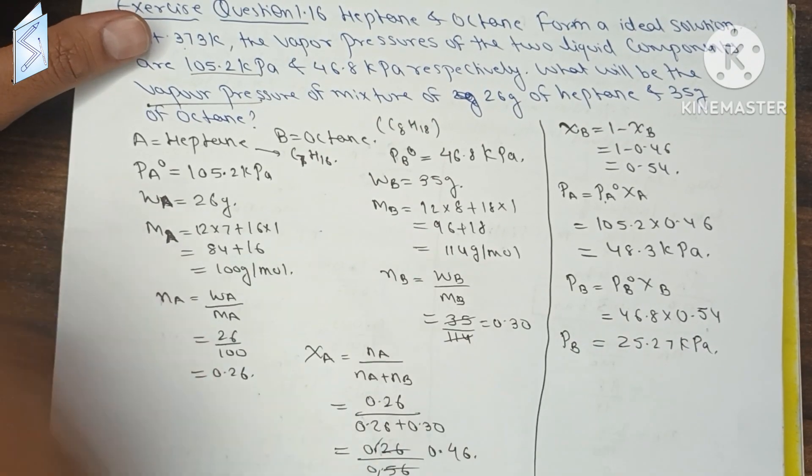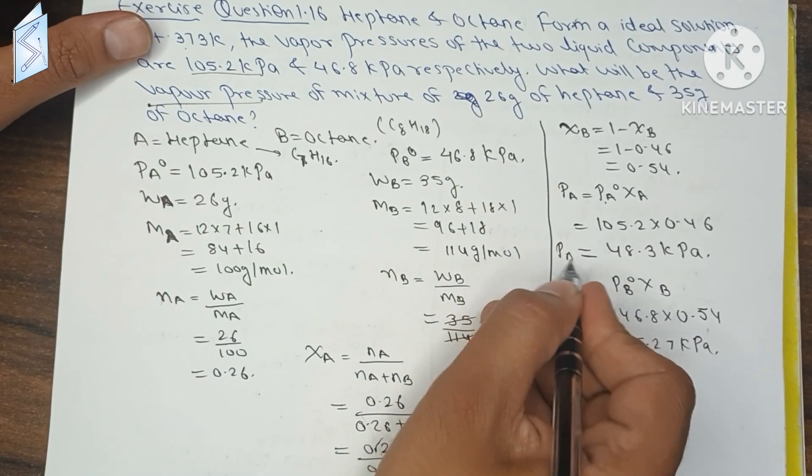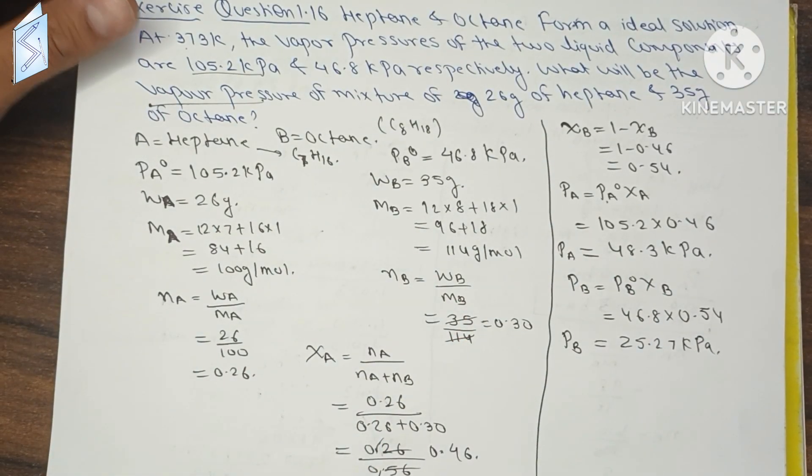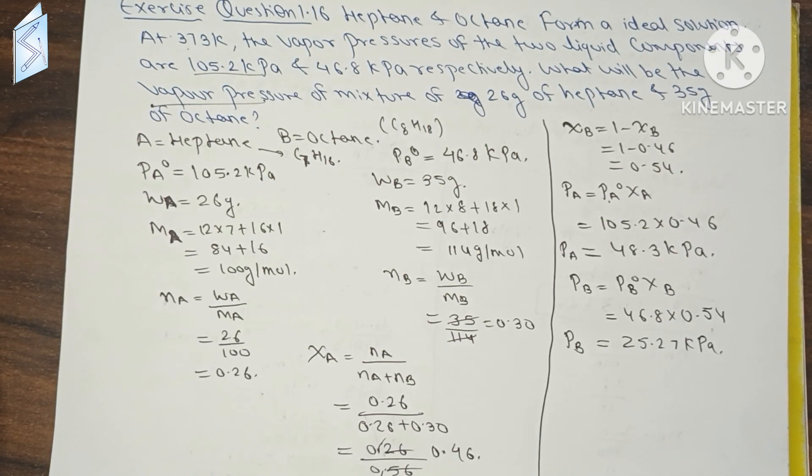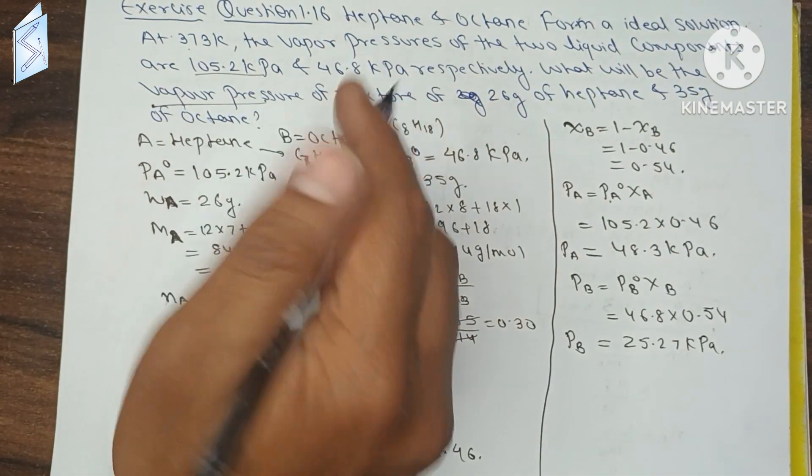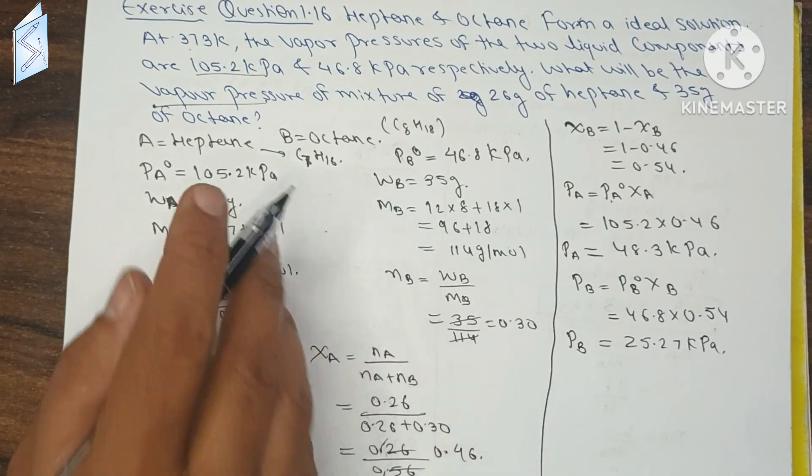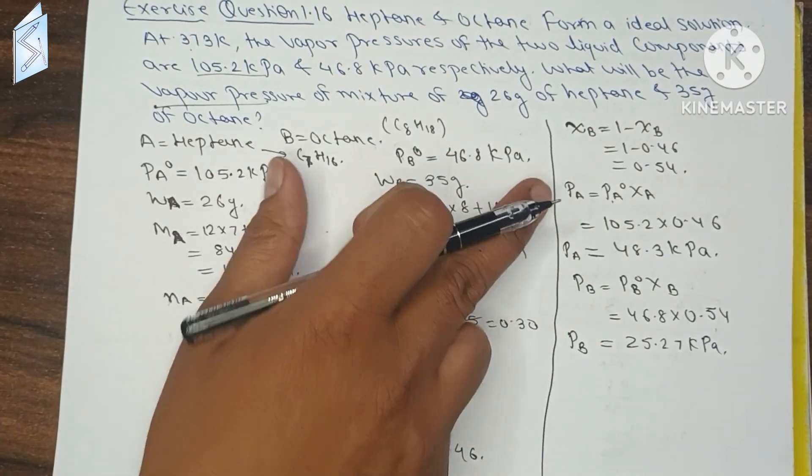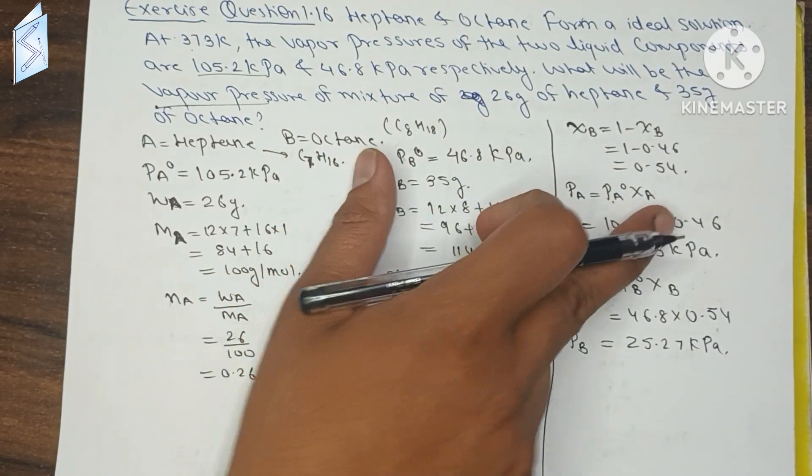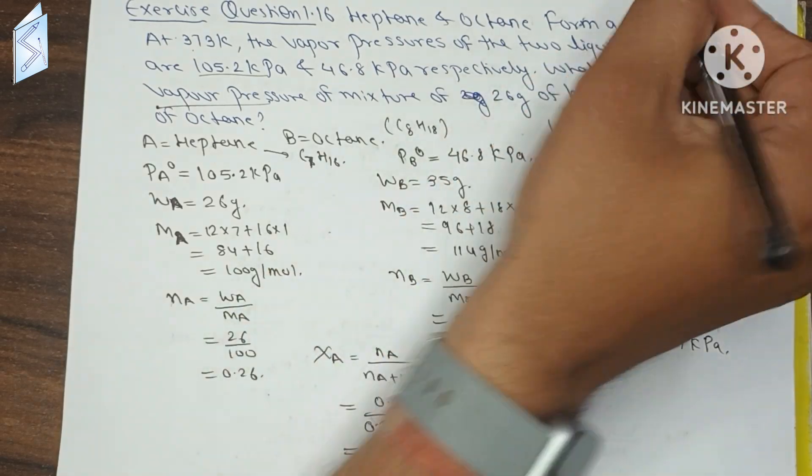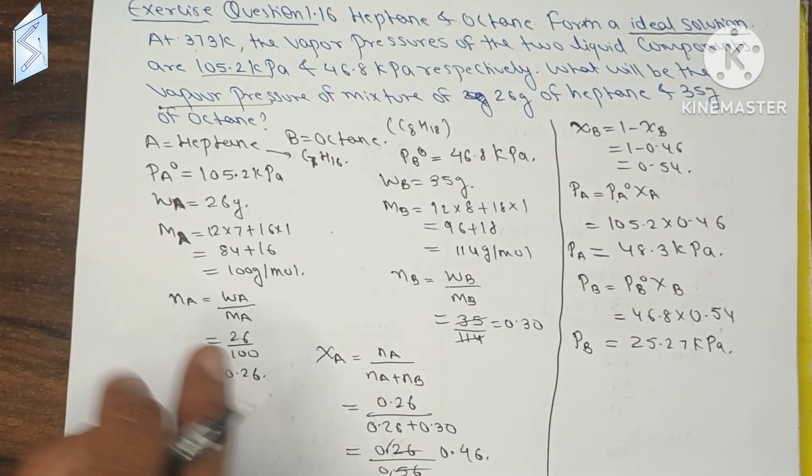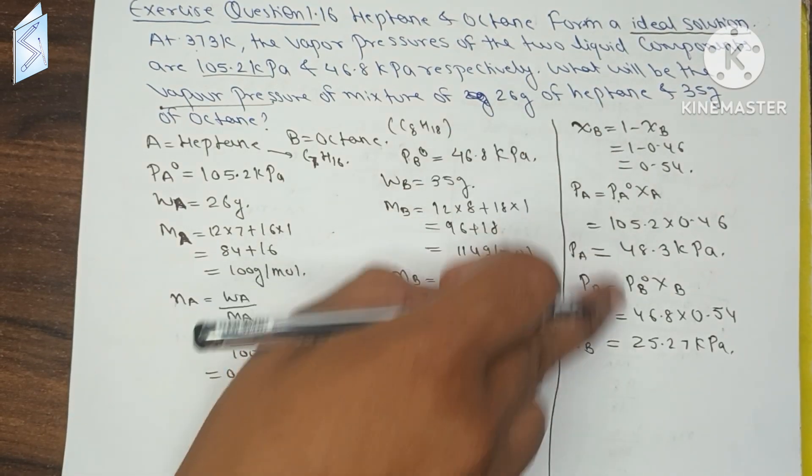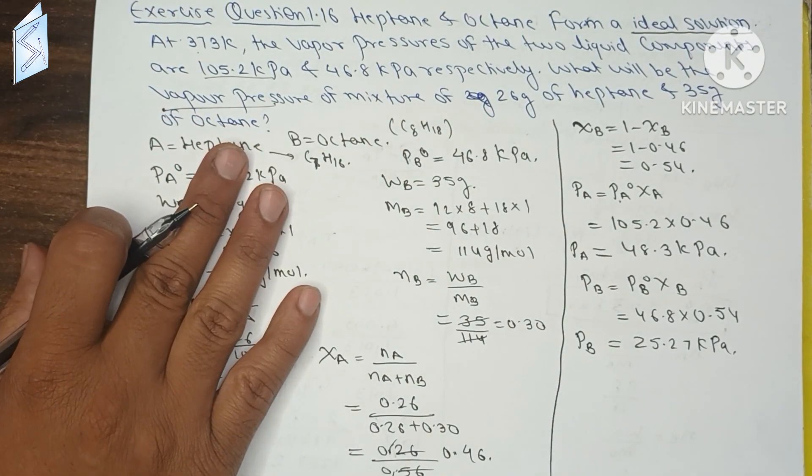This is our answer. PA is 48.3 kPa and PB is 25.27 kPa. So what was asked? The two vapor pressures in the mixture were asked. Vapor pressure means PA and PB, because they have written ideal solution. So first we calculate XA and XB, then put values in. The video will come to 1.17.